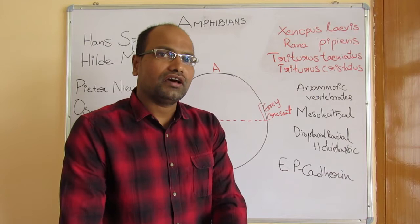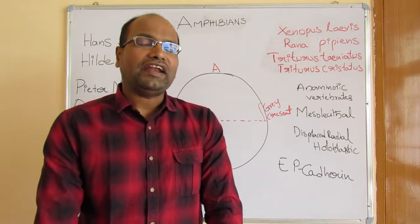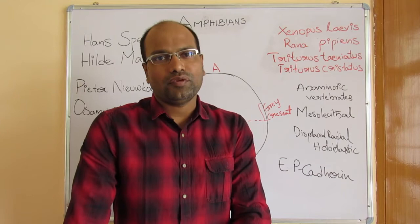We also have Triturus taeniatus and Triturus cristatus — these two species belong to salamanders, commonly known as newts, and were widely used in early studies of developmental biology in amphibians.